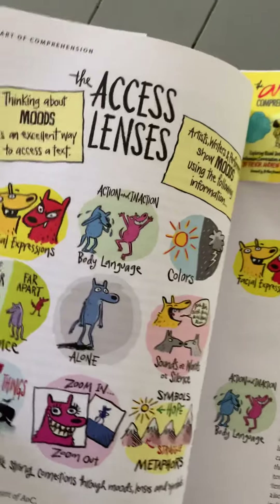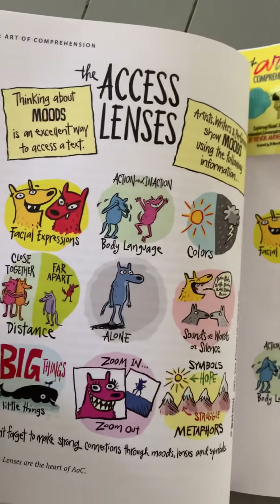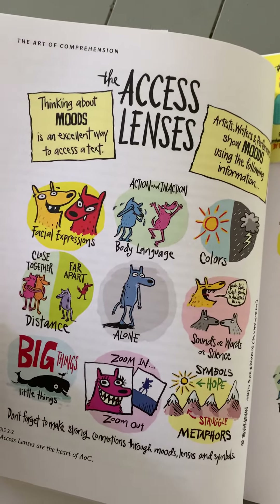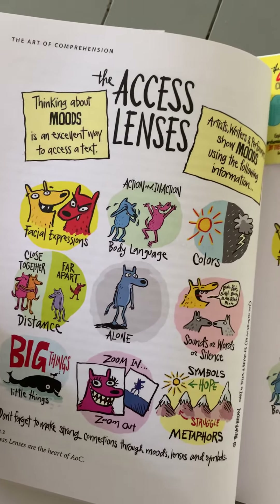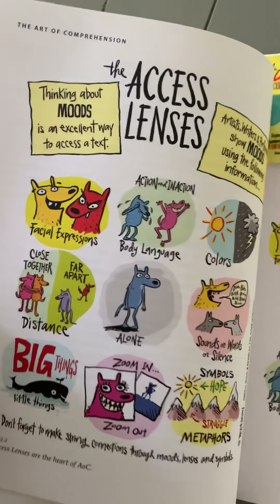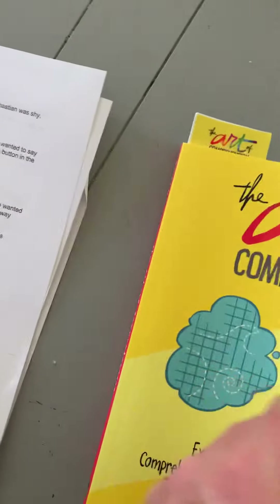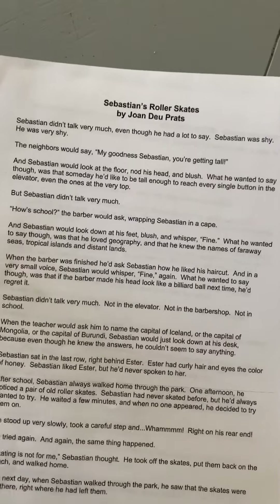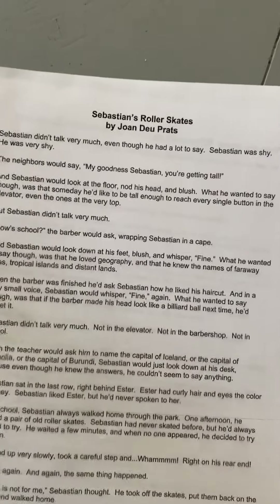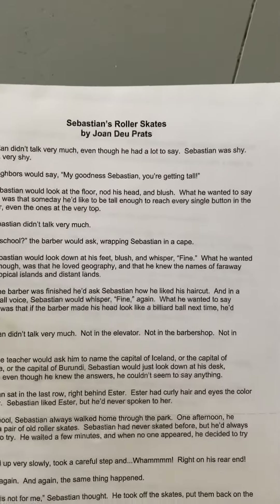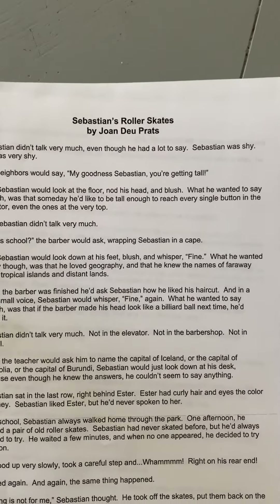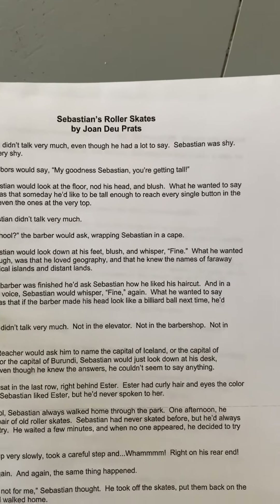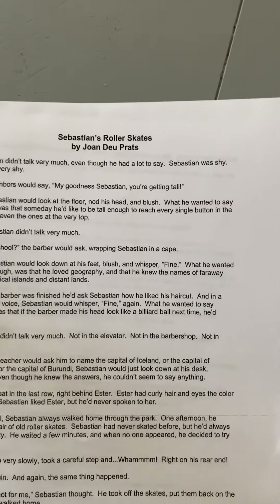And I just want to show you a quick example of how stories are told through mood, about how characters feel, and how that mood can be crafted. The example comes from Sebastian's Rollerskates by Joan Dupratz. And the start of it is: Sebastian didn't talk very much, even though he had a lot to say. Sebastian was shy. He was very shy.